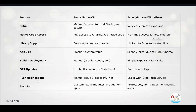For OTA updates — that is over-the-air updates — this is not built in for React Native CLI. You go through the normal process of deploying via the App Store or Play Store. But in Expo, OTA updates are a built-in functionality, so any change you make gets reflected on the application immediately. Push notifications are also easier with Expo, whereas in React Native CLI it requires a manual setup.